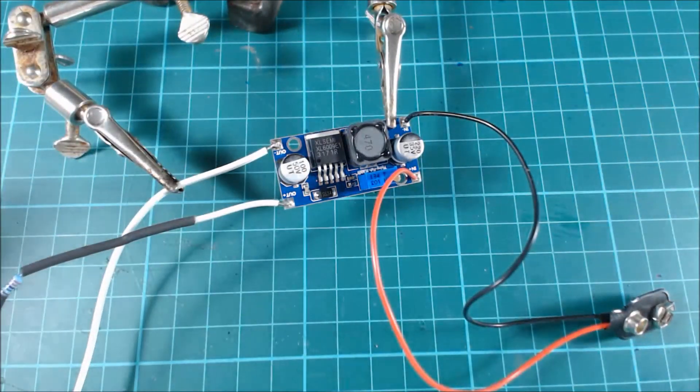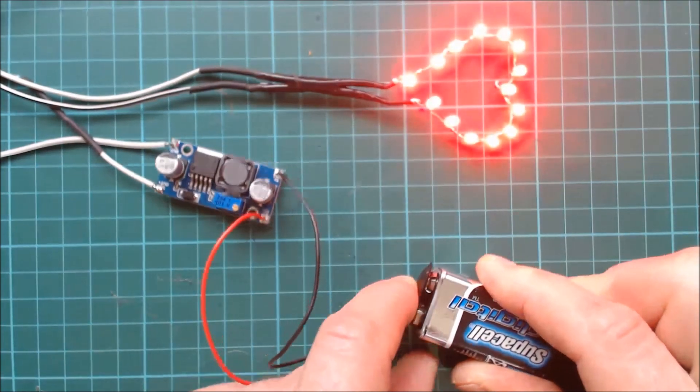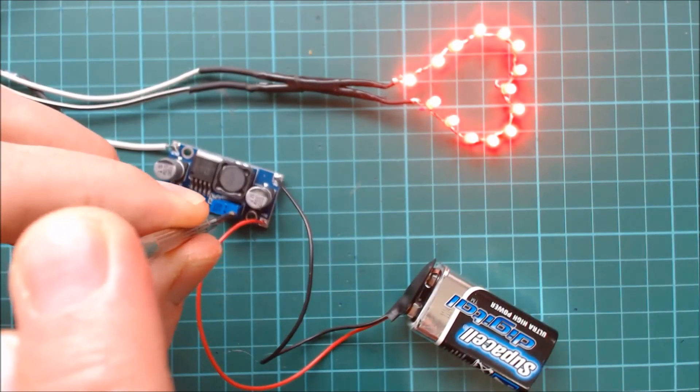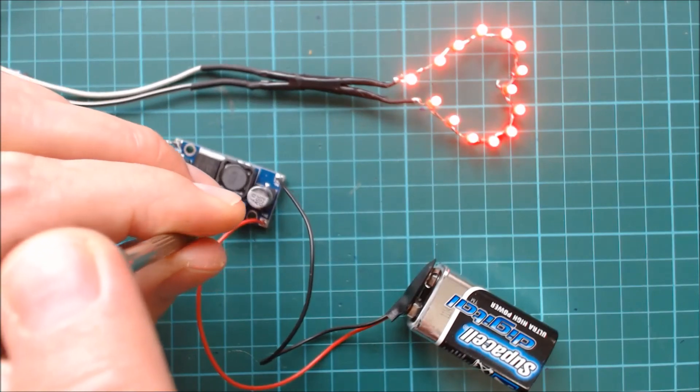Finally, solder the lamp leads onto the module output terminals with the plain wire going to the positive out and the wire with the stripe going to the negative out. So that's the project finished, you can now connect the battery to turn the lamp on. And then if you want to reduce the light output, you can turn the little potentiometer screw clockwise to reduce the voltage.